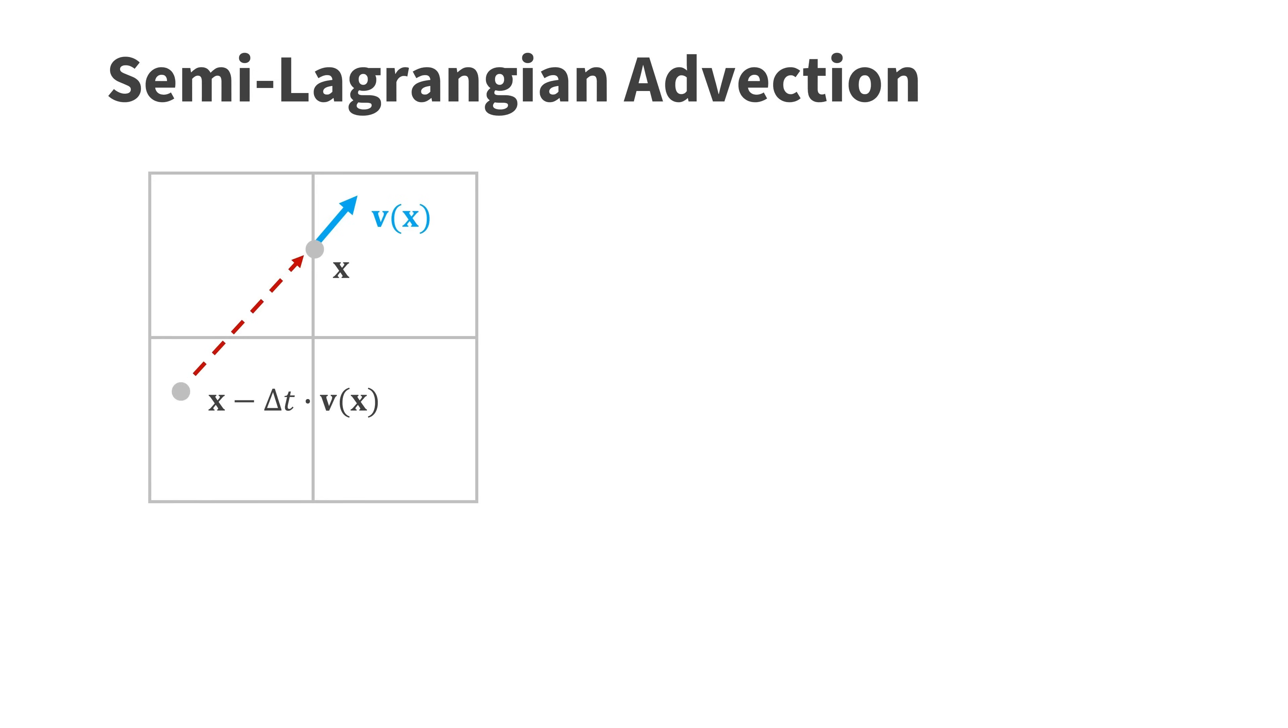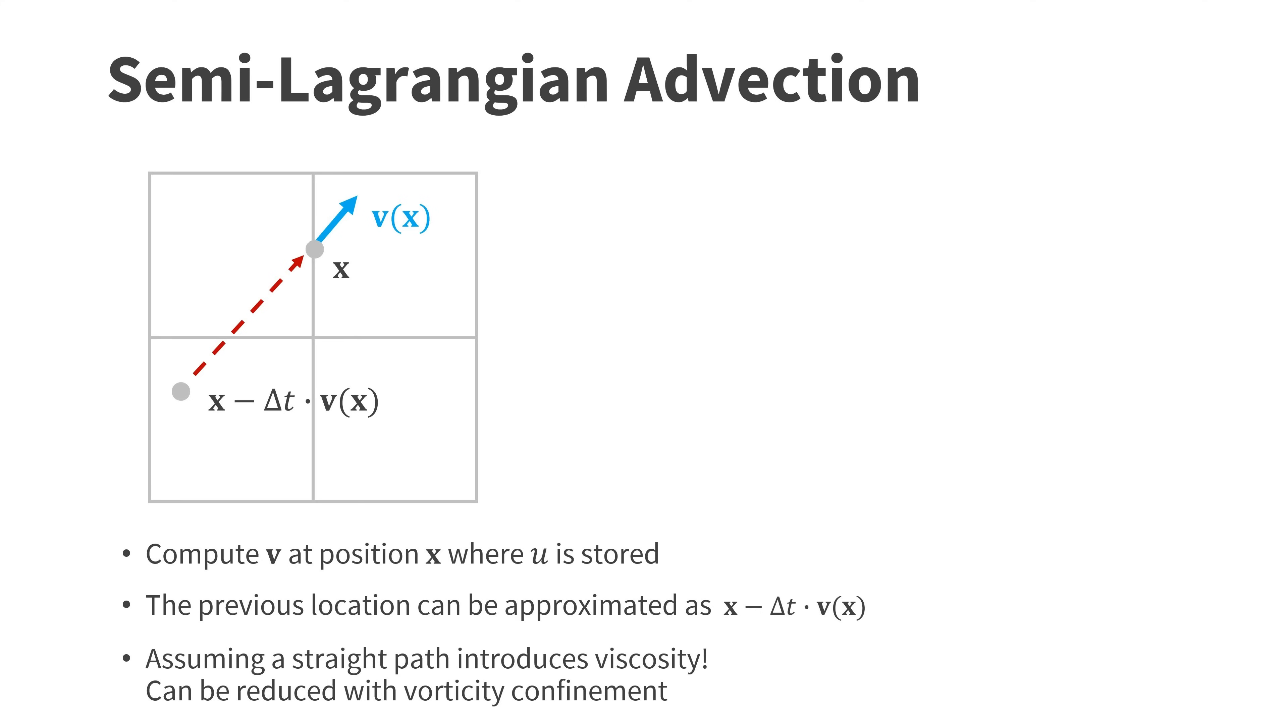But how can we compute this previous location? For this we first compute the full two-dimensional vector V at the location of the U component. Then the previous location can be approximated by x minus delta t times V. Here we assume a straight path. This simplification introduces viscosity though. There are a variety of methods to reduce this effect. For instance, vorticity confinement.